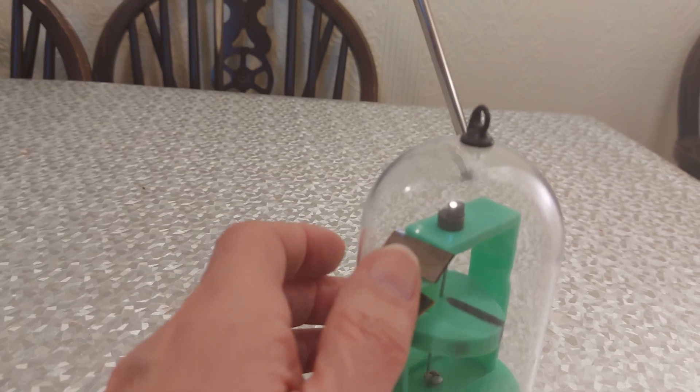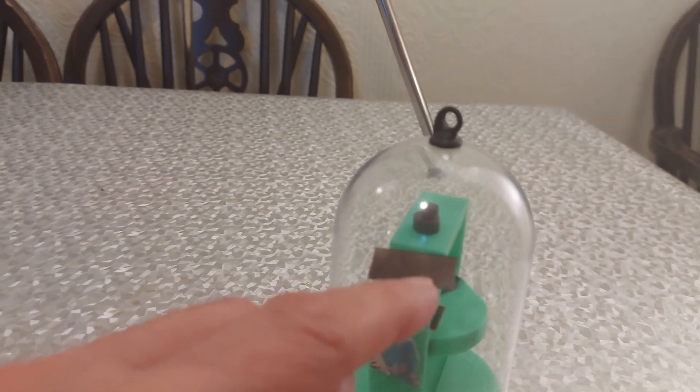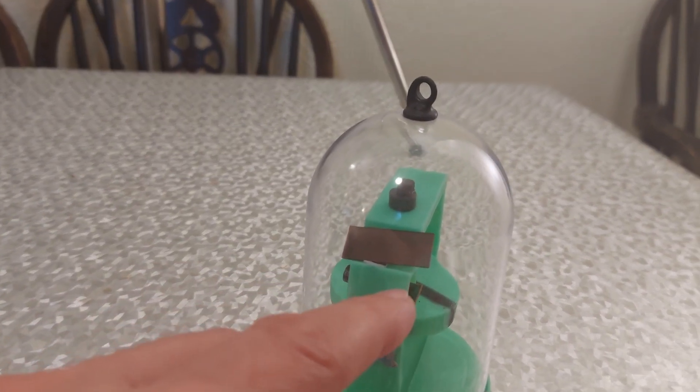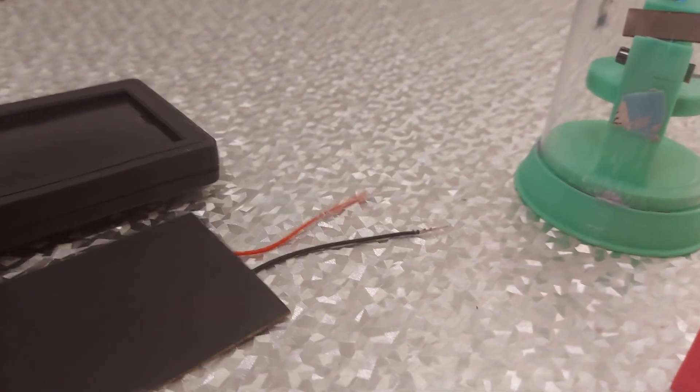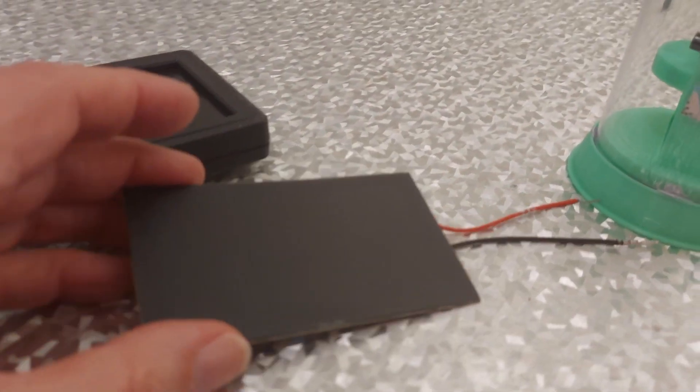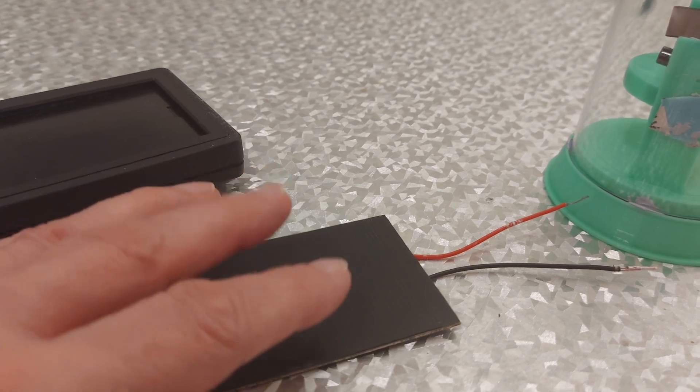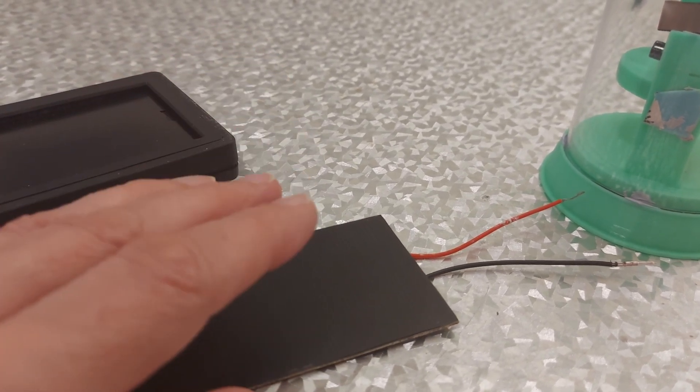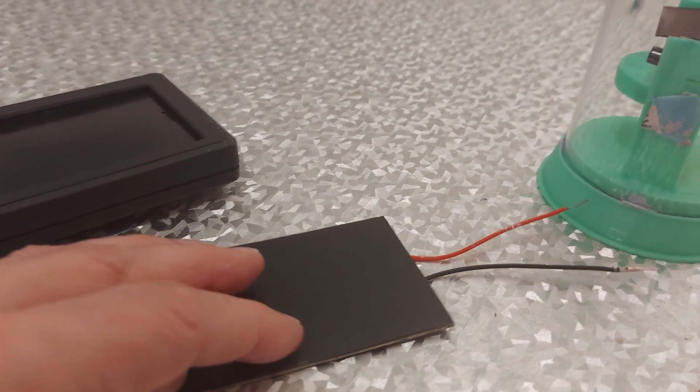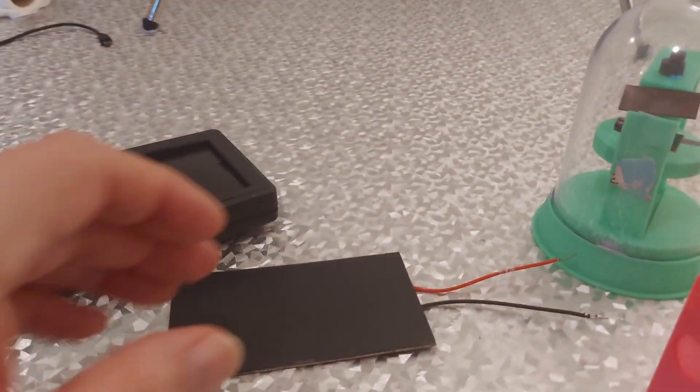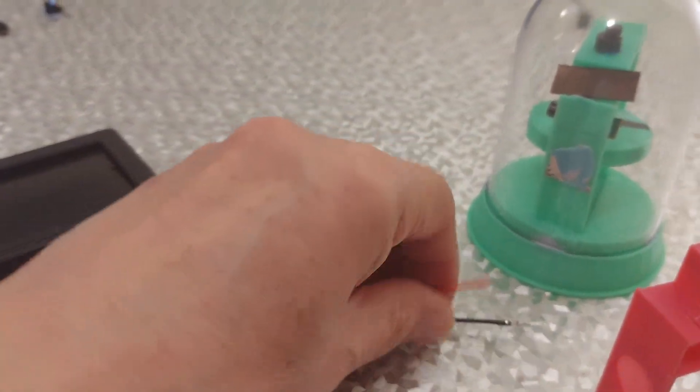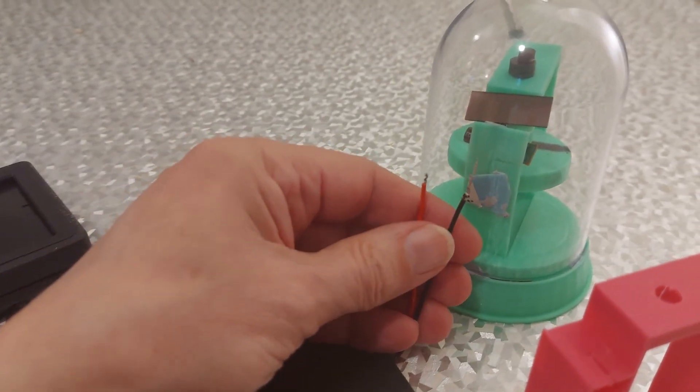But instead of that solar panel, which is sufficient in sunlight, we're going to use this solar panel, which is way too powerful. But just indoors in ambient light, like the lights in this room, or even without them on a reasonable day, that should be enough to actually run it.